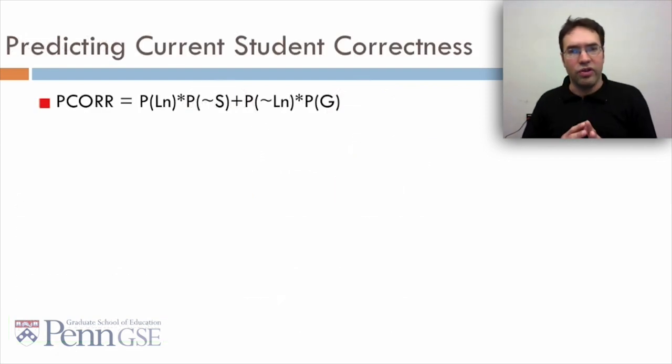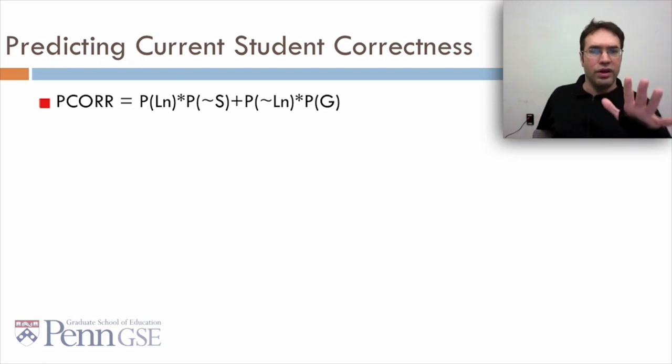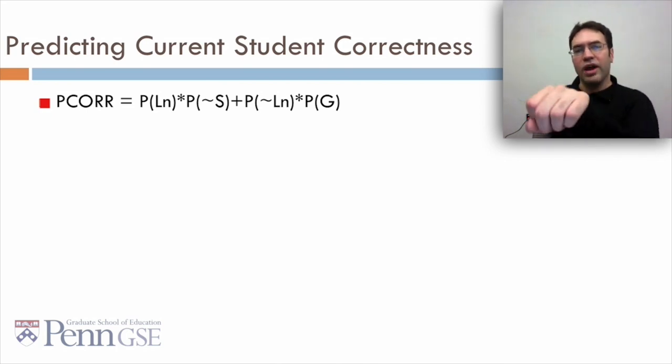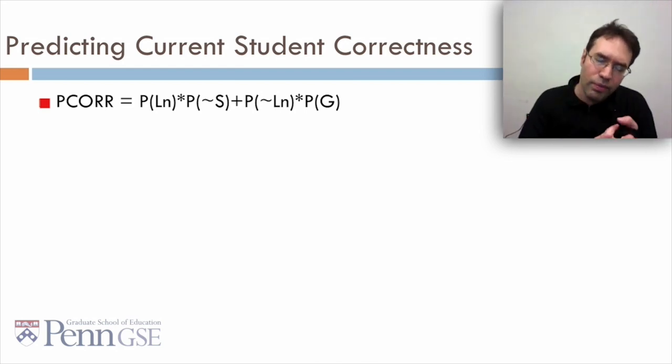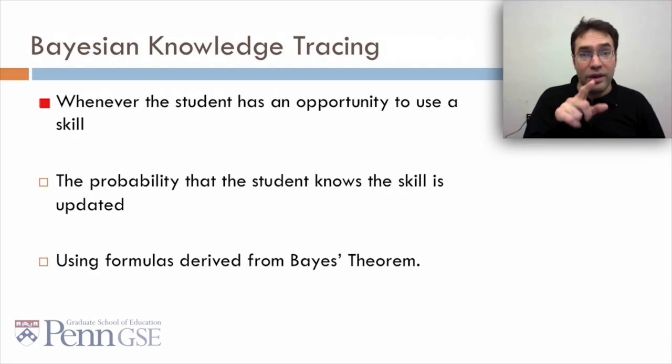How do we predict current student correctness? Well, P(COR) is simple. It's just the probability you know it, P(Ln), times the probability you didn't slip, plus the probability you didn't know it times the probability you guessed. In other words, there's only two ways you can get things correct in the world of Bayesian knowledge tracing. You know it and you don't slip, or you don't know it and you guess.